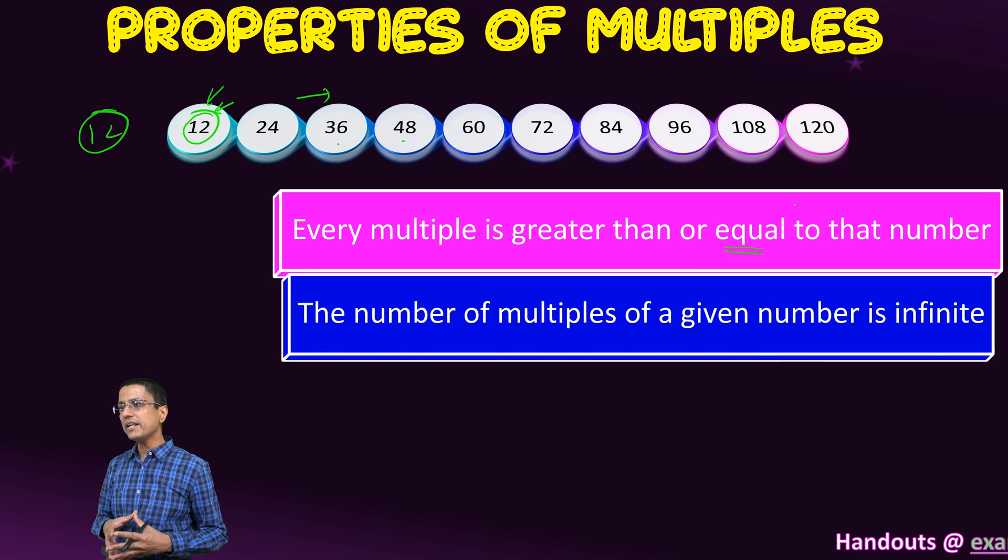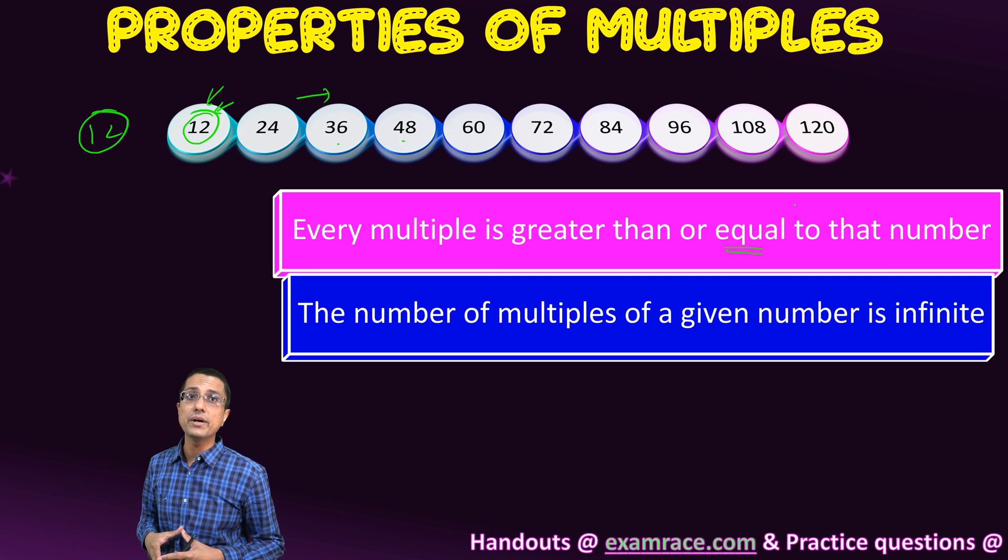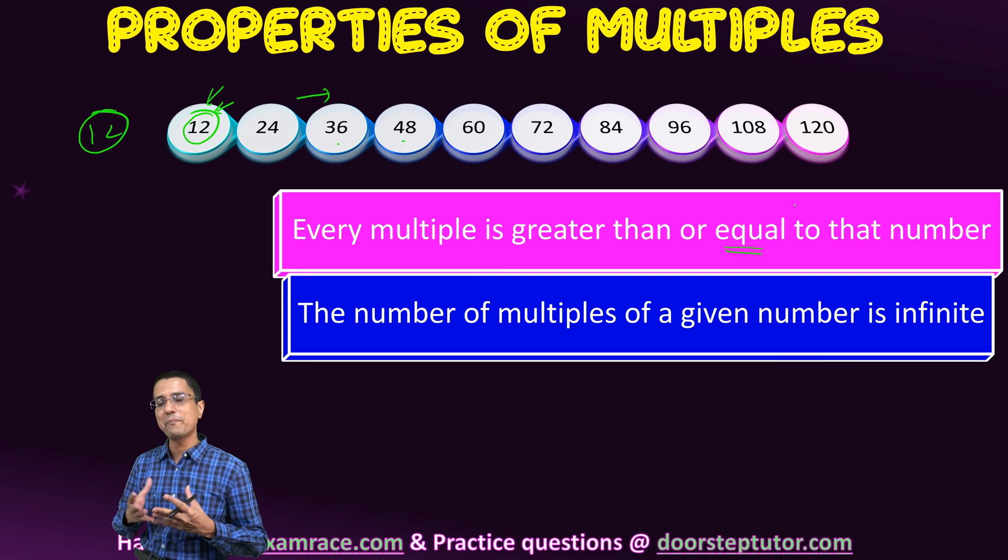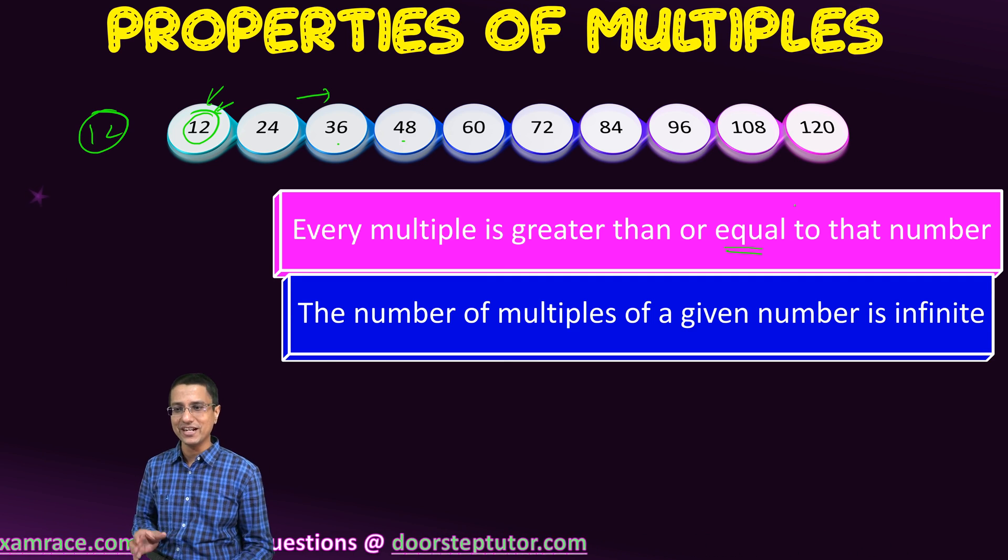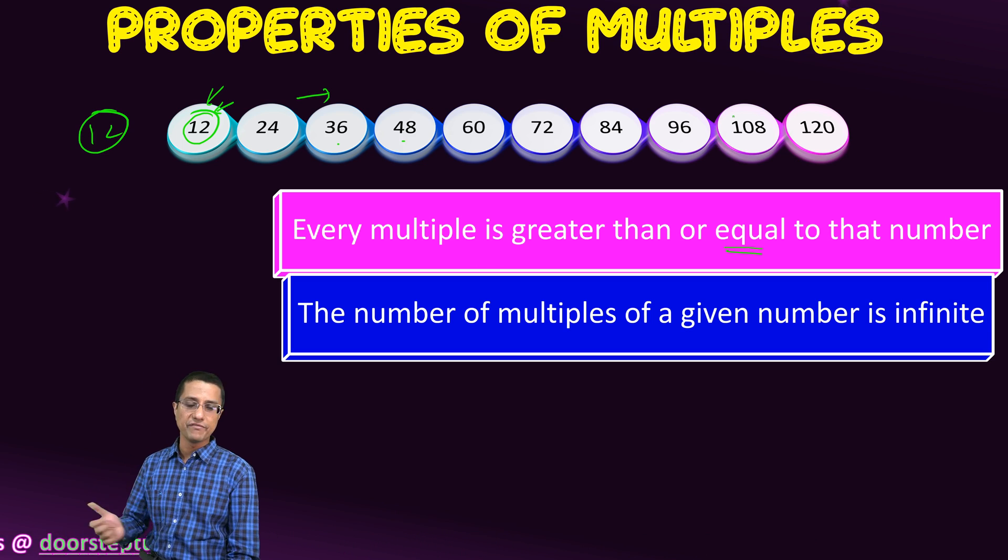The second property is that I can come up with as many multiples of a number as I possibly can. It is just up to my patience or my ability to do multiplication. But the number of multiples of a given number is actually infinite.